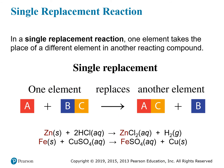The next type is a single replacement reaction. Here you have one element and one compound reacting together. The element takes the place of one of the elements in the compound — element A kicks out B from compound BC, so A ends up partnered with C, and B is left by itself. A replaces B in the compound with C, and since there's just one replacement, we call it a single replacement.